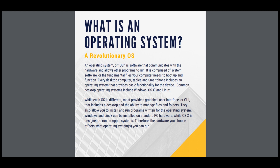Excalibur is an operating system, or OS — software that communicates with the hardware and allows other programs to run. It's comprised of system software, or the fundamental files your computer needs to boot up and function, and it protects your computer. Operating systems include Windows, OS X, and Linux.